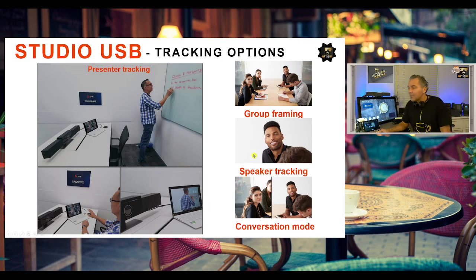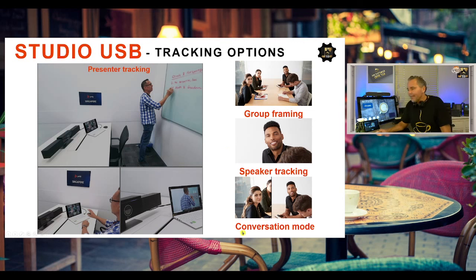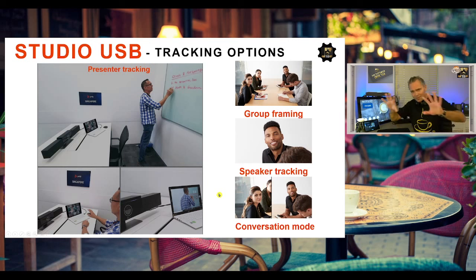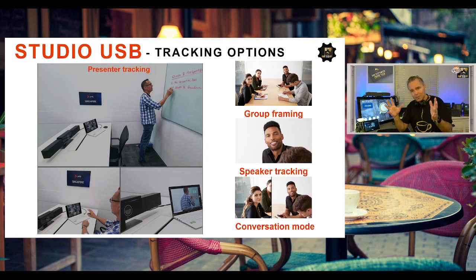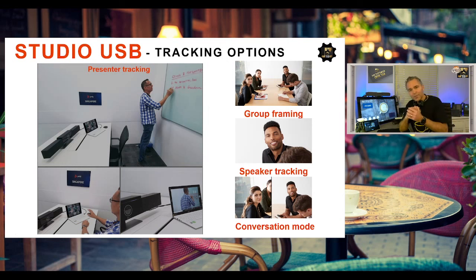Speaker tracking is really nice - it's able to zoom into a specific speaker in that room. Now one other really powerful feature is conversation mode. Conversation mode makes it possible that when two participants in the room are talking to each other, it will automatically split the screen so you will see both of them in a discussion - it will show both participants. Really powerful.